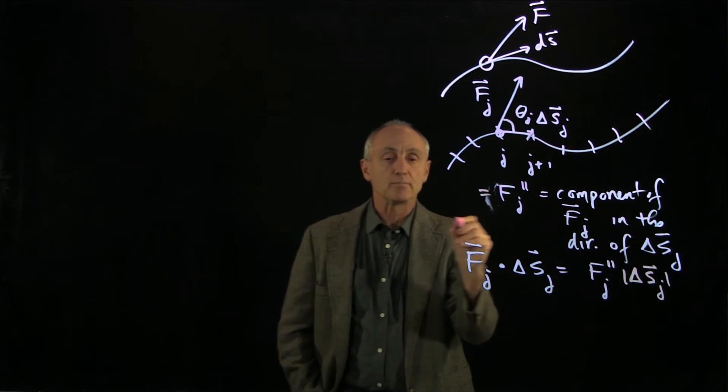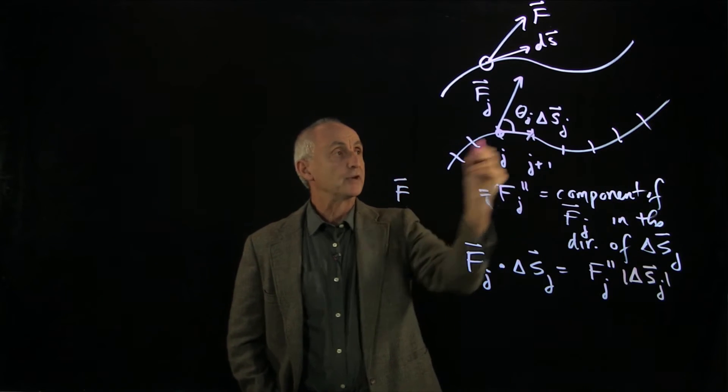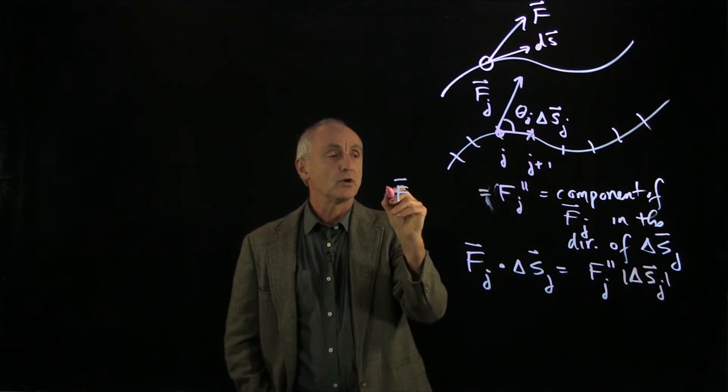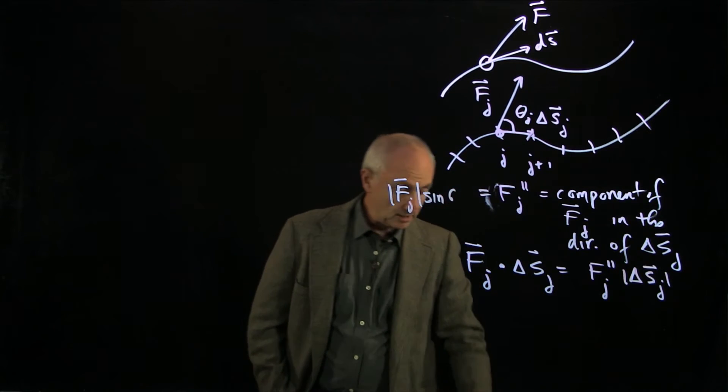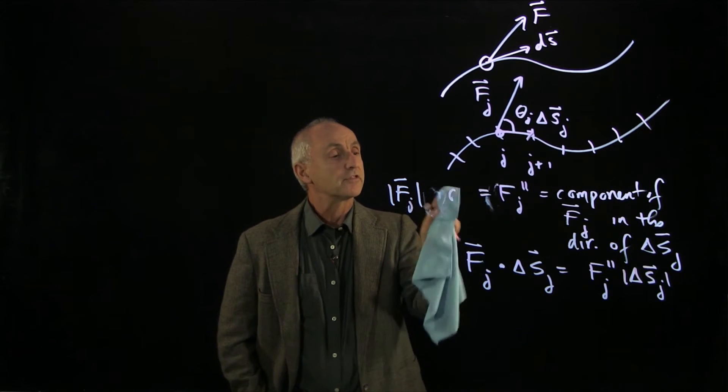And again, when we write that component in our notation, if we call this angle theta j, we know that that's the magnitude of Fj times cosine of theta j.